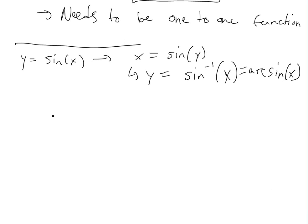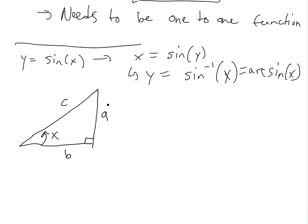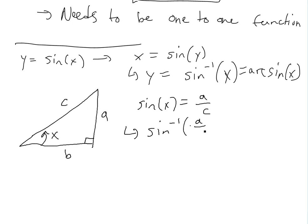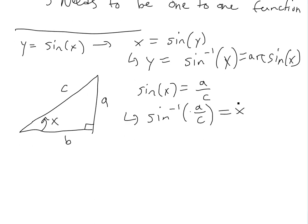So basically what this is saying: if you have an angle in a right angle triangle, and we call this x, with sides a, b, c — sine of x equals a over c, that's opposite over hypotenuse. But now with the inverse, you put the a over c inside, so it's switched. We get the ratio and that equals x — that's basically what it is.